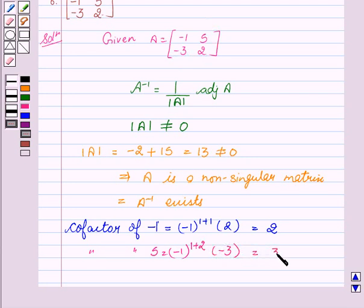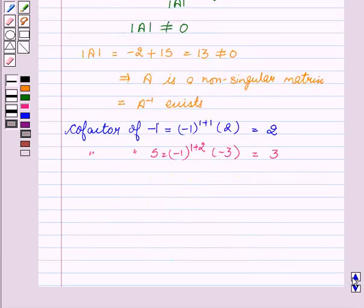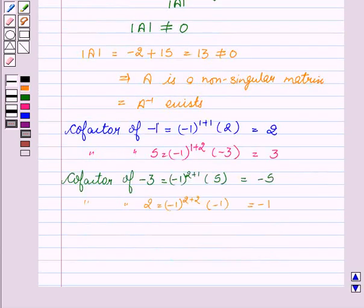Similarly we will write the cofactors of -3 and 2. Cofactor of -3 equal to -5 and cofactor of 2 equal to -1.